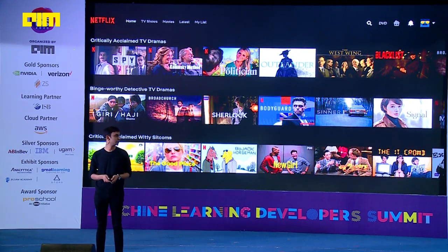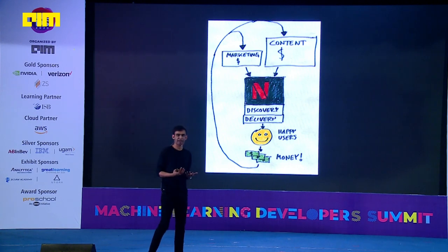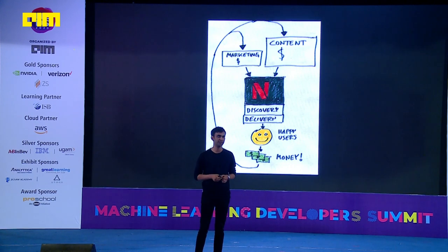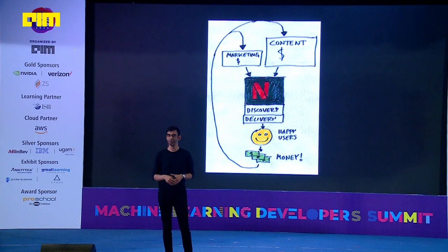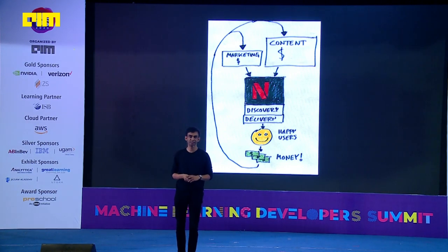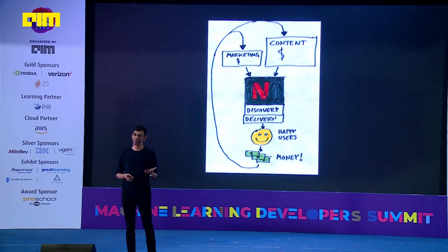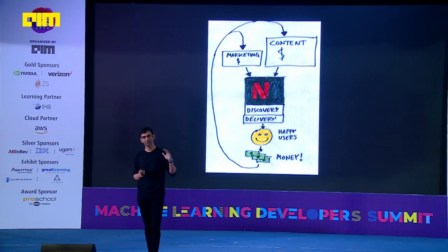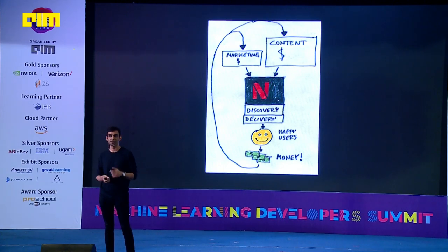I don't have a business background, but this is a very naive version of what our business model looks like. Consumers like you and me sign up for Netflix, we log into the page, and there is our recommendation system at work, allowing us to discover new content. Then we hit play, and at that point the control is passed to our content distribution network, which delivers the video streaming bits to your personal device — whether it's a cell phone, television, or gaming console.